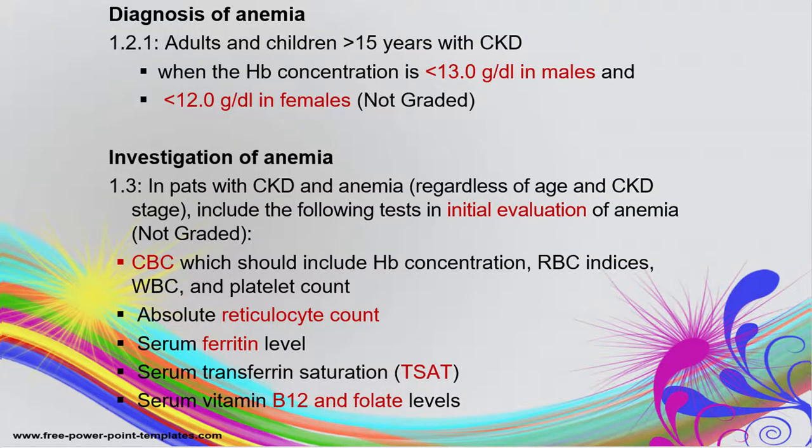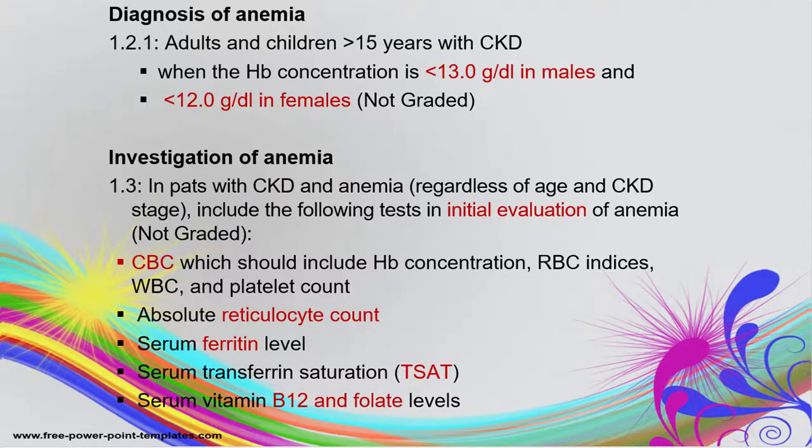When our CKD patients have a diagnosis of anemia — for those over 15 years with CKD, hemoglobin less than 13 in males and less than 12 in females — they may be diagnosed with anemia. When patients have anemia, we have to evaluate the underlying cause to correct it. Initial evaluation includes complete blood count, reticulocyte count, ferritin level, transferrin saturation, and peripheral blood smear.